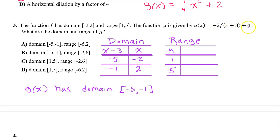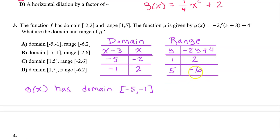Let's do the same thing with the range. The transformations that affect the y values are outside of the function: that's the negative two and the plus four. So new y values are found by doing negative two times y plus four. Negative two times one is negative two, plus four is positive two. Negative two times five is negative ten, plus four is negative six. Putting these in order from least to greatest, the transformed range is from negative six to two. So the answer is a.